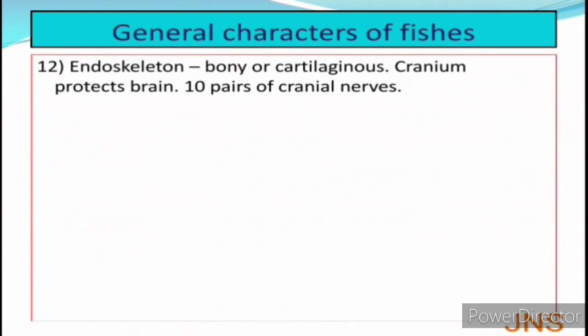The endoskeleton of the fish is bony or cartilaginous. The skeleton found in the body is called the endoskeleton. In some fishes it is bony — those are called bony fishes — and in some cases the endoskeleton is made of soft bone, which is called cartilaginous.